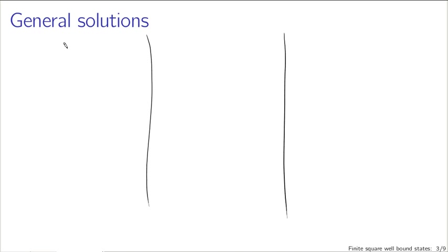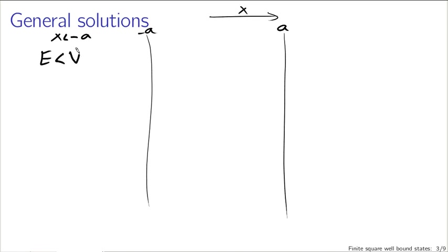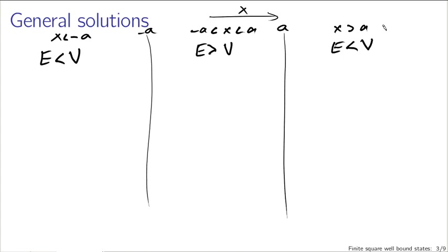The general solutions we're working with have three regions: a region to the left of the well, a region in the center of the well, and a region to the right of the well — say x less than minus a, minus a to a, and x greater than a. For x less than minus a, if we're looking for a bound state, the energy is less than the potential. For the central region, the energy is greater than the potential. And for x greater than a, the energy is again less than the potential.